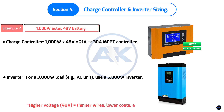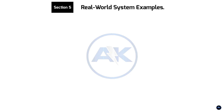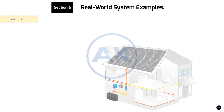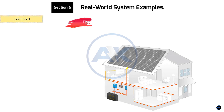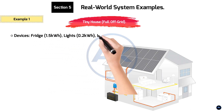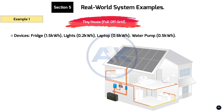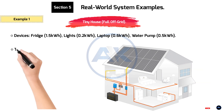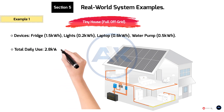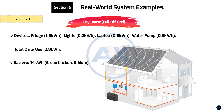Section 5: Real-world system examples. Example 1: Tiny house, full off-grid. Fridge: 1.5 kWh. Lights: 0.2 kWh. Laptop: 0.6 kWh. Water pump: 0.5 kWh. Total daily use: 2.8 kWh. Battery: 14 kWh (5-day backup, lithium). Solar array: 3,000 watts (6 hours sun). Cost estimate: $15,000–$20,000.